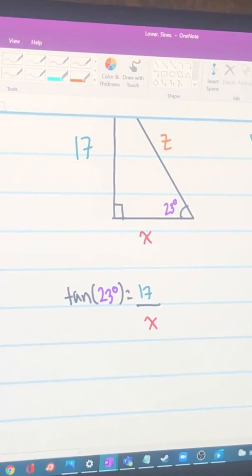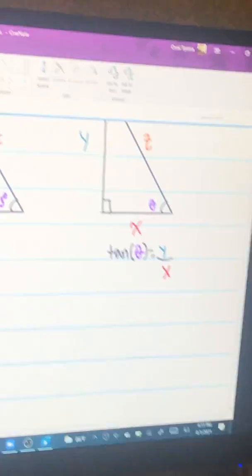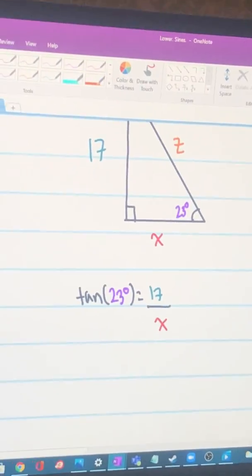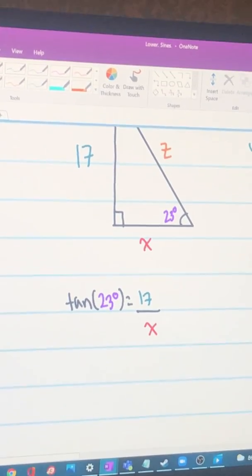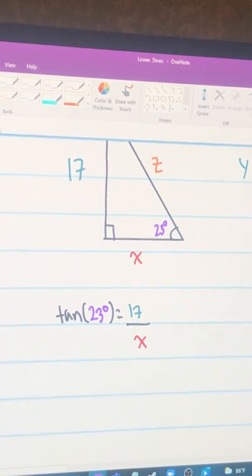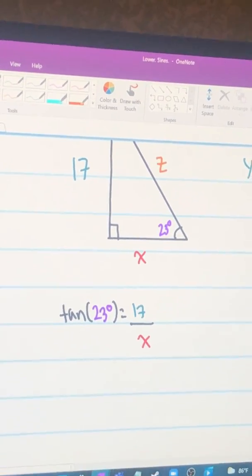So looking at the formula, you should come up with something like this: tan of 23 degrees equals 17 over X. Then you're gonna multiply by X on both sides.